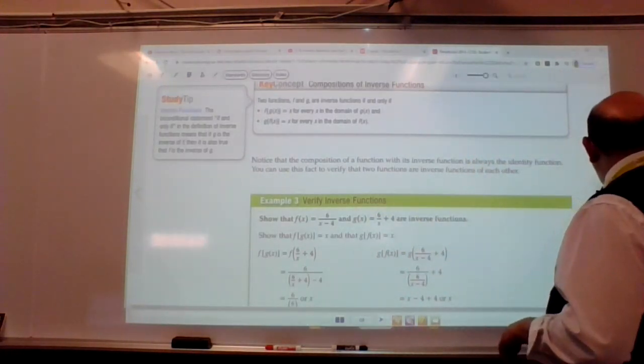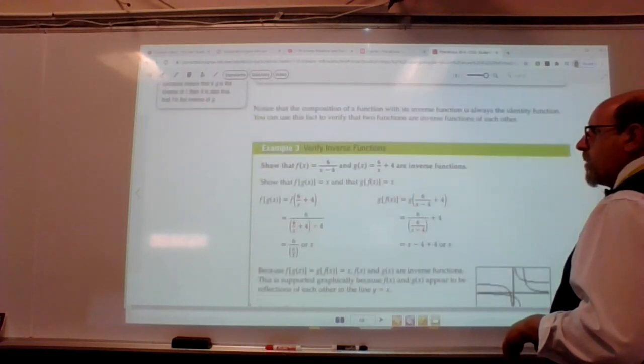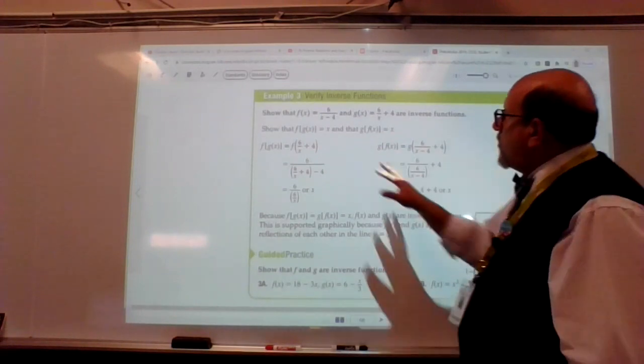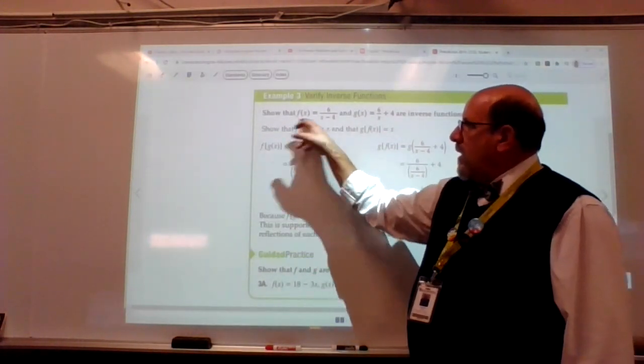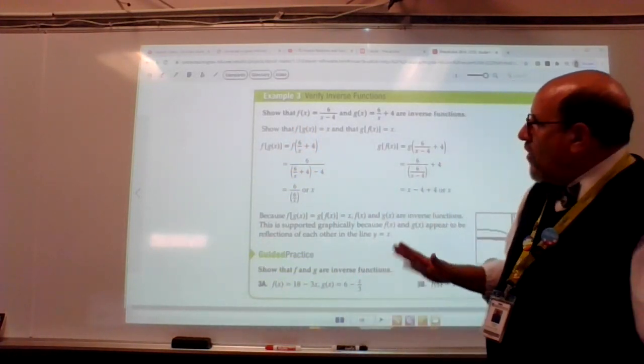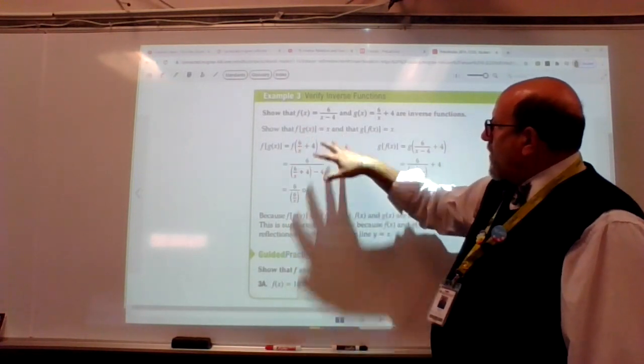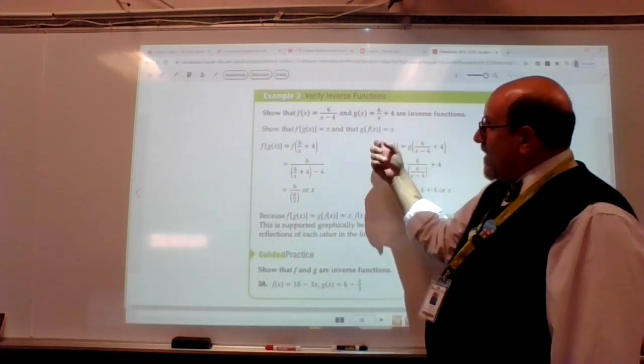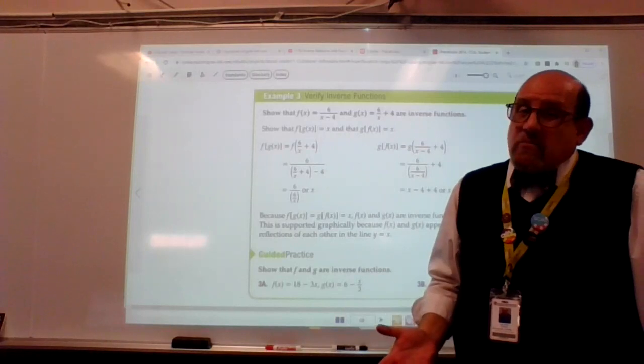I'm going to show you this example here. This says show that it works for both. I don't know if I've ever run into a situation where you can do the composition and come out with x, and then the other composition doesn't work. I'm sure it's possible, anything's possible. But if you test one, I'm going to say you're almost guaranteed that it's going to work for the other.